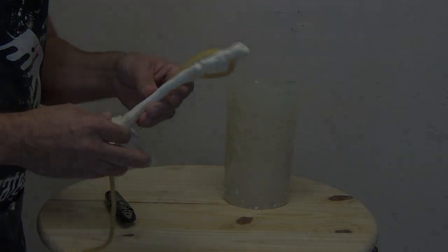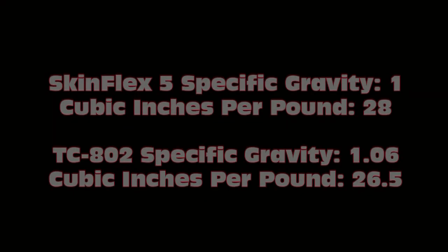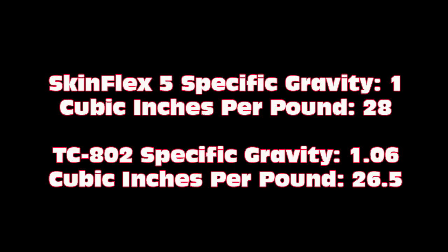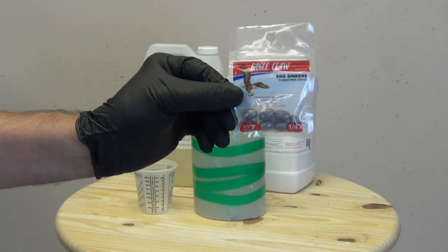In this case, we have the SkinFlex 5, which has a density basically about the same as water. SkinFlex 5, the specific gravity is 1, and the cubic inches per pound are 28. When we have 1, that's typically a very low specific gravity. That's like water. Then TC802, the casting resin, that one has a specific gravity of 1.06. The higher that specific gravity, the more dense the material. 802 has 26.5 cubic inches per pound. So we're pretty safe there that the 802 is not going to try to float.